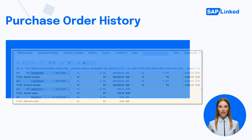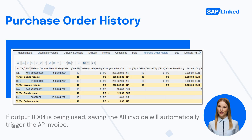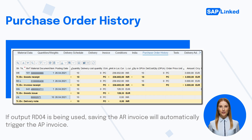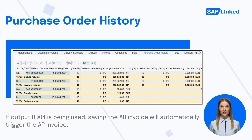The flow should be updated as indicated in the Purchase Order History tab for the intercompany PO. If output RD04 is being used, saving the AR invoice will automatically trigger the AP invoice. You can check if the AP invoice was posted successfully by going to ME21N, entering your intercompany purchase order number, and navigating to the Purchase Order History tab. There you can see the AP invoice number.